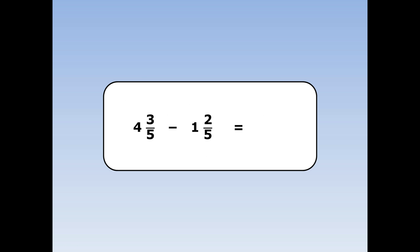4 and 3 fifths take away 1 and 2 fifths. First of all we take away the whole numbers: 4 take away 1 is 3. Next we take away the fractions: 3 minus 2 is 1 and the 5 stays the same.